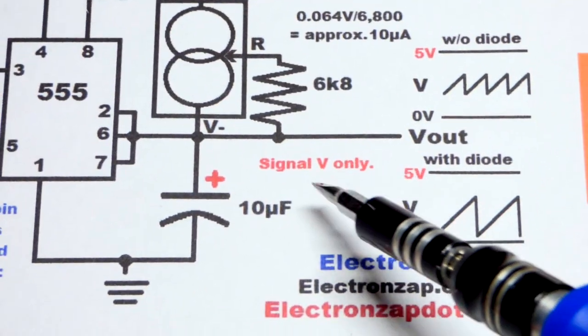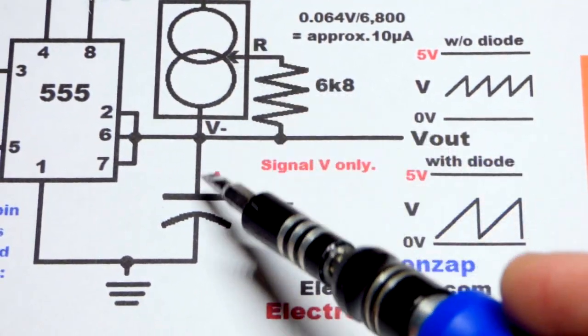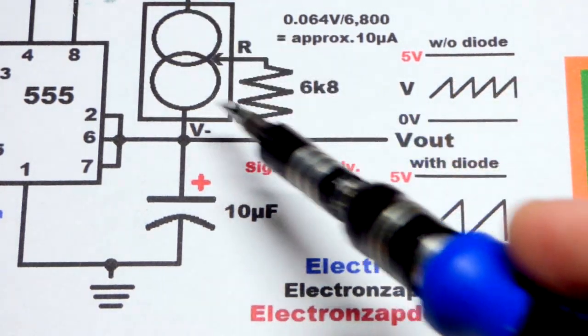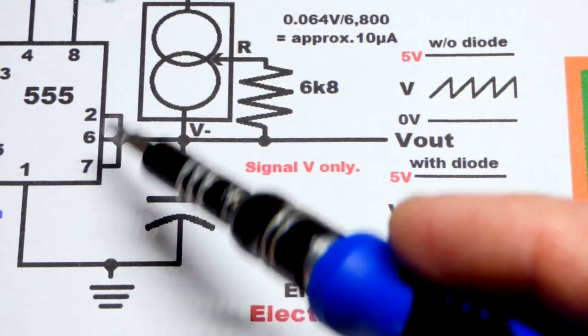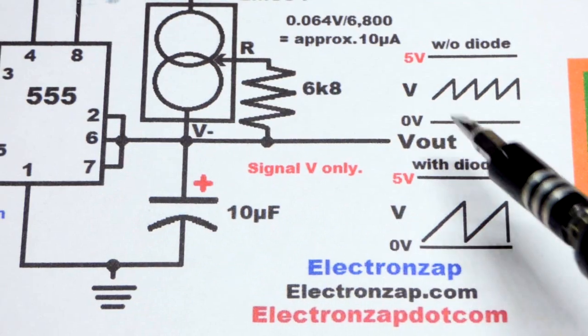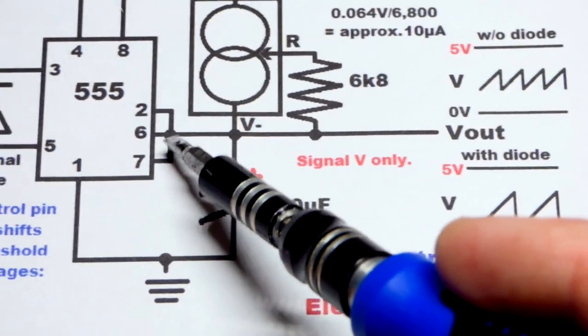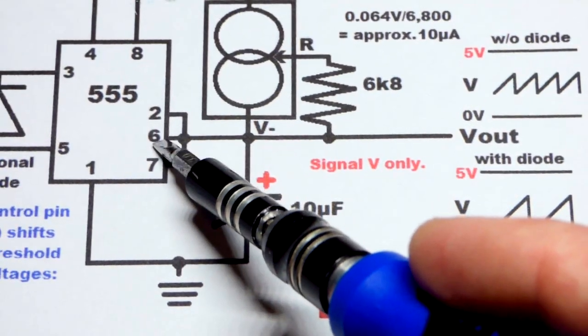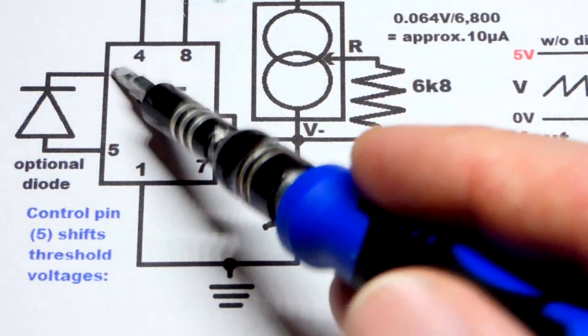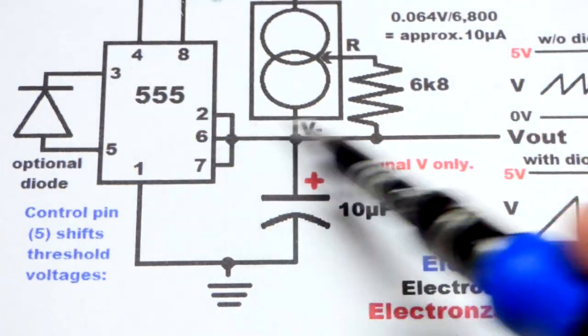The capacitor will charge up to two-thirds of the supply voltage over time, since this is a steady current. None of these pins are letting current through. Once it hits two-thirds of the supply voltage, the threshold pin tells the output to go low. We don't use the output for the signal.